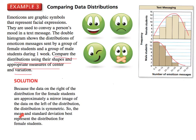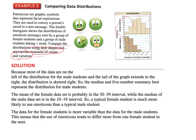Let's start with the female students. Because the data on the right of the female students is approximately the same as the left, we can say it's symmetric. Since it's symmetric, the mean and standard deviation best represent the distributions for female students — the mean represents the measure of center and standard deviation shows the variation. For male students, the tail of the graph extends to the right, so the distribution is skewed right, meaning the median and five-number summary best represent the distribution for male students.